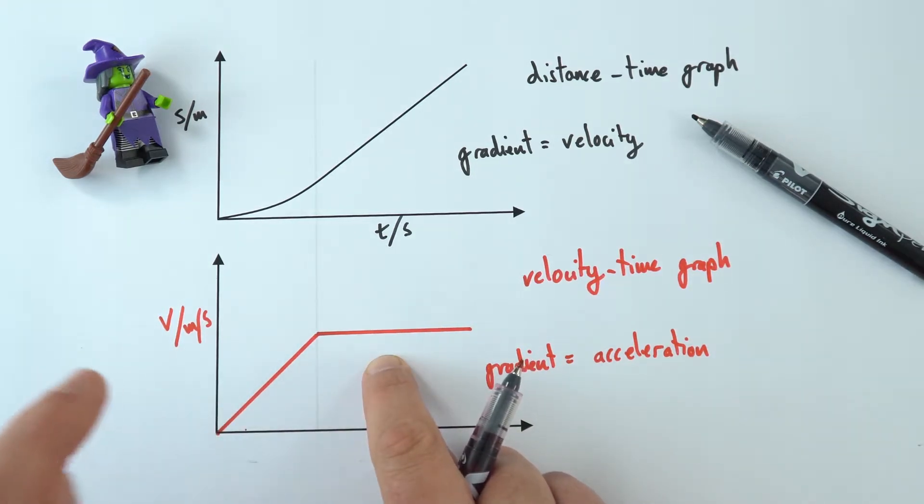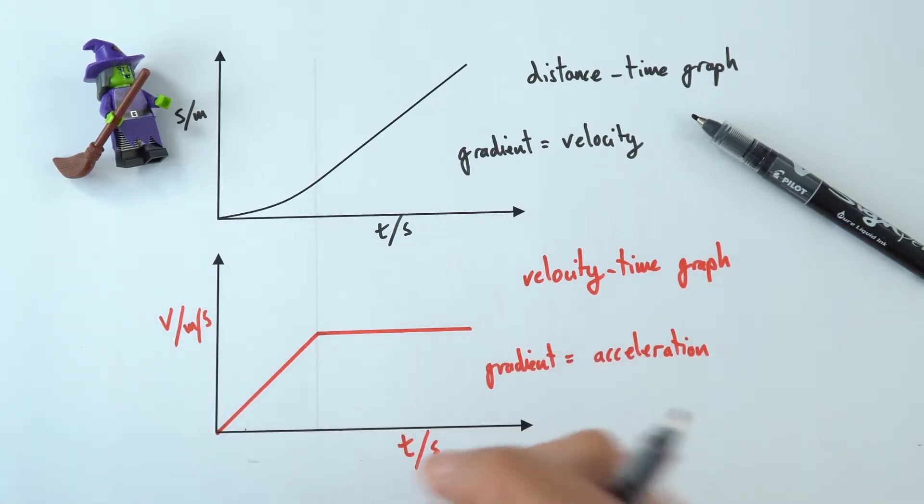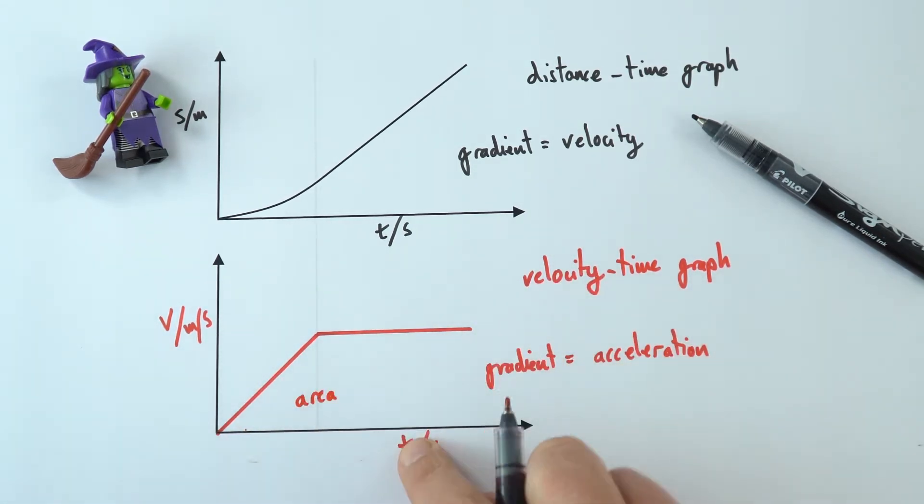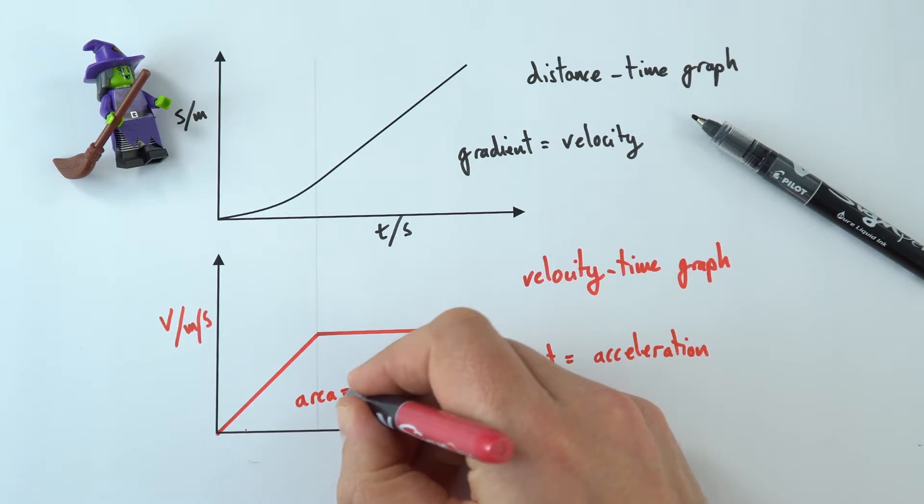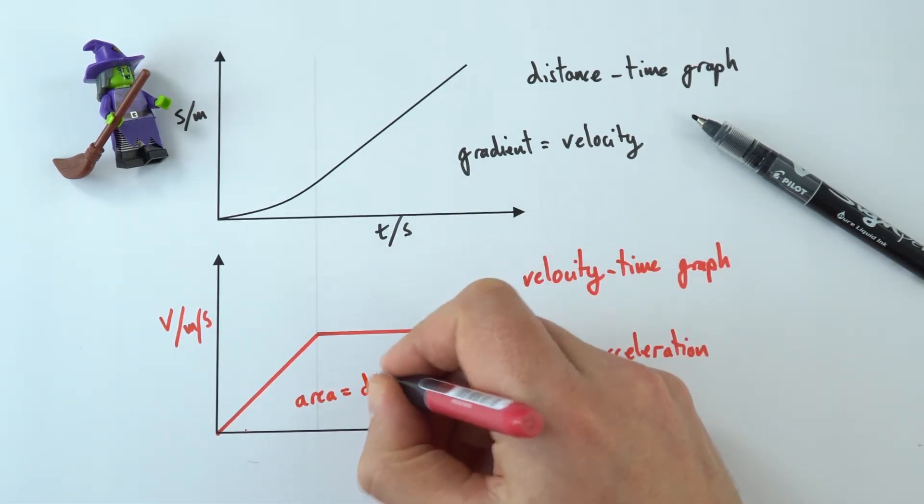But we also know that if we were to look at the velocity multiplied by the time, that is then actually the distance traveled. And in this case here, the area which is between the x-axis and the line, the area represents a distance traveled in a certain direction, which is what we call the displacement.